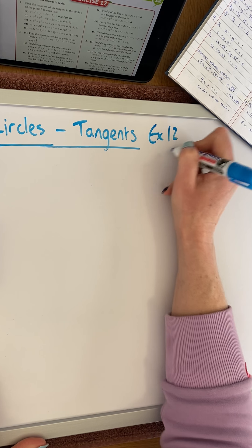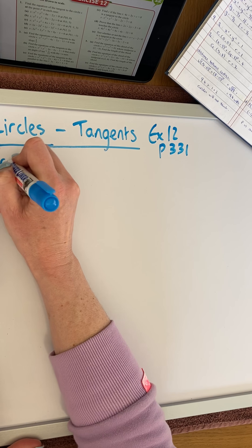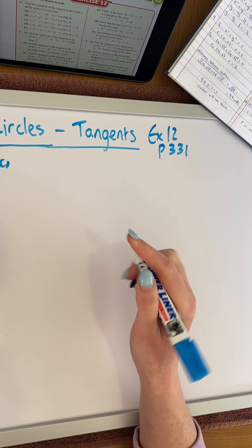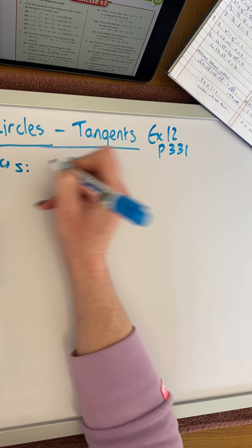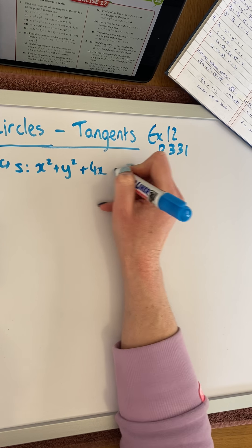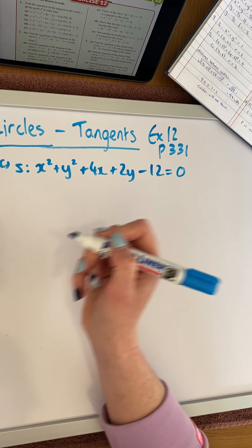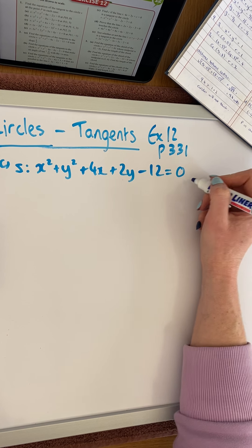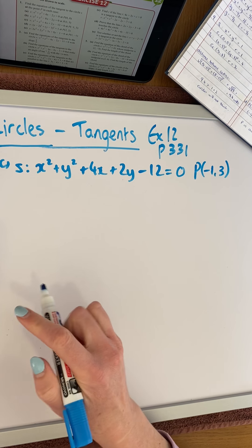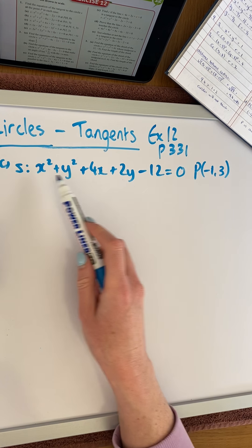Exercise 12, page 331. We're going to look at question number one, part C. We're asked to find the equation of the tangent to the circle S at the point P. The equation of the circle is x² + y² + 4x + 2y − 12 = 0, and the point of contact P is (−1, 3).